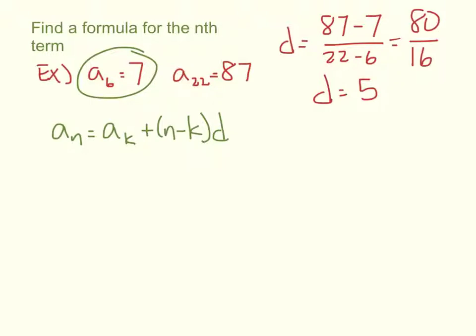So here we're using a₆ equals 7, that term in the sequence. So aₙ. What would my aₖ be here? 7 plus n minus what? 6 times 5.